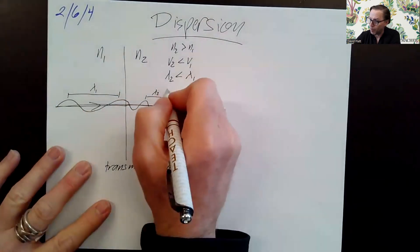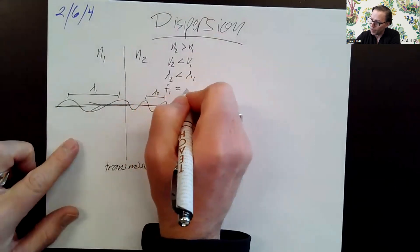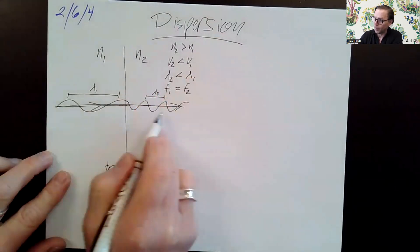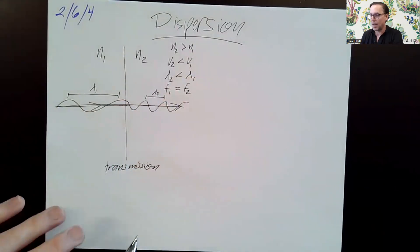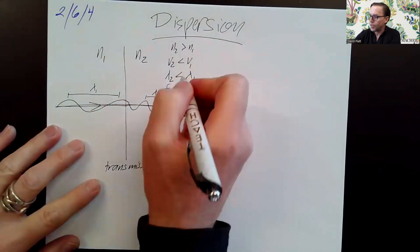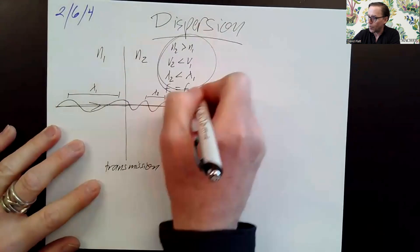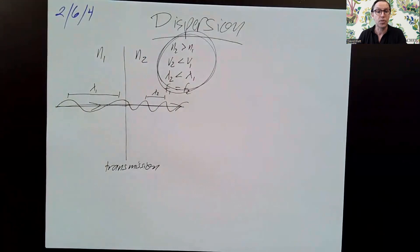Now, the frequencies are the same. The frequency in medium one is equal to the frequency in medium two. Remember that — I talked about that in a previous video. These are great relationships that you shouldn't have to memorize; you should just be able to think your way through them.